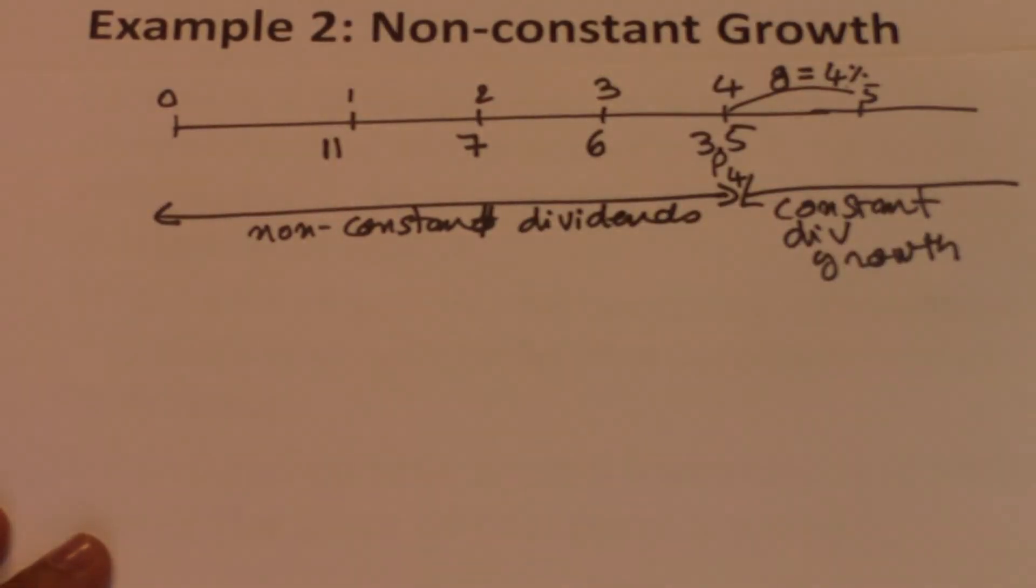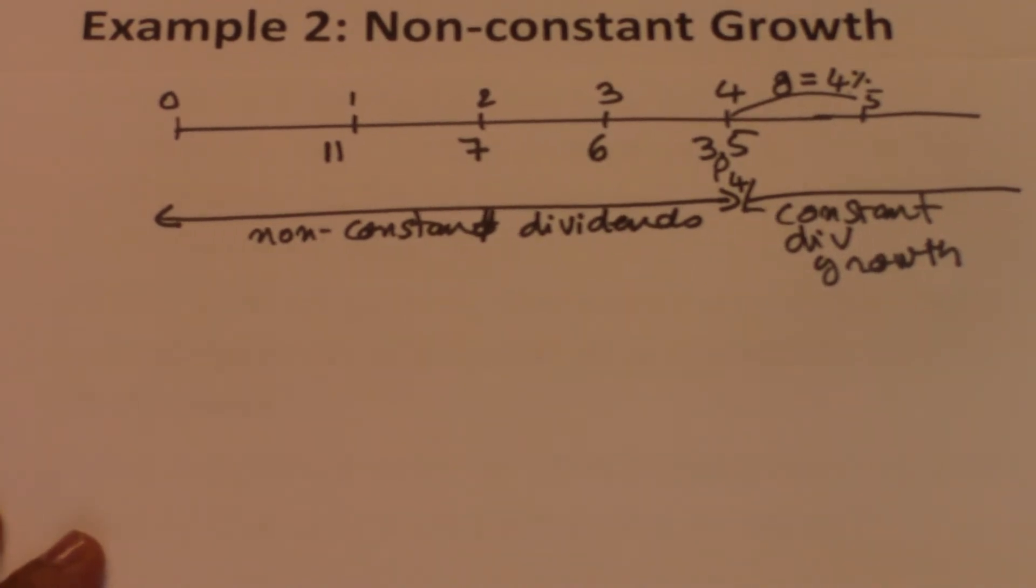P4 would be equivalent to the present values of all future dividends expected after year 4, discounted back to year 4. That P4 is going to reflect all dividends that are to be received after year 4, discounted back to the end of year 4.